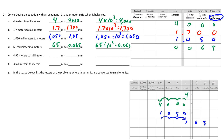The next one goes from meters — 4 and 92 hundredths — and I add a zero, so that equals 4,920 millimeters. Just like the top two problems: 4 and 92 hundredths multiplied by 10 to the third power equals 4,920.